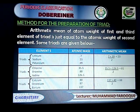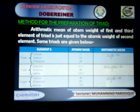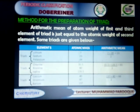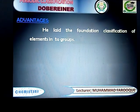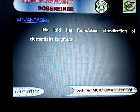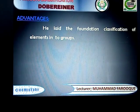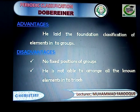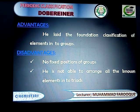Now I will tell you how to calculate the mean. The formula for mean is: sum of terms divided by number of terms. Now we will study the advantages and disadvantages of Dobereiner's classification. Advantage: he laid the foundation of classification of elements into groups. Disadvantages: there was no fixed position for groups, and he was not able to arrange all the known elements.